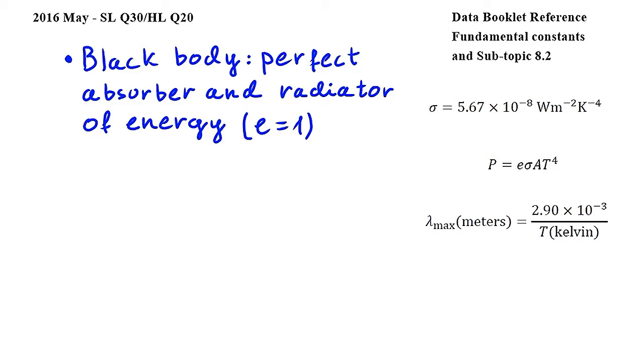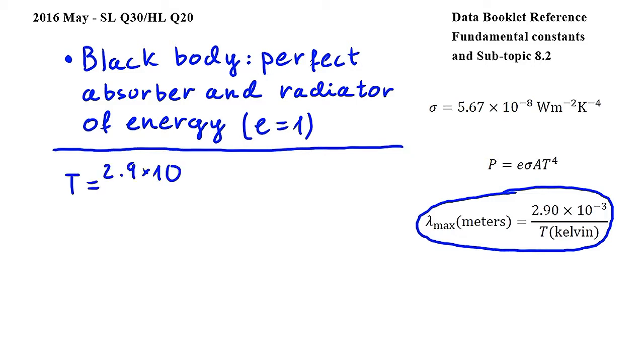Next, let's use this equation from subtopic 8.2 to calculate the temperature of the body. Here, lambda max is the peak wavelength and T is temperature. Rearranging the equation for T, we get T is equal to 2.9 times 10 to the power of negative 3 divided by the peak wavelength, which is given to be 2.9 times 10 to the power of negative 6.